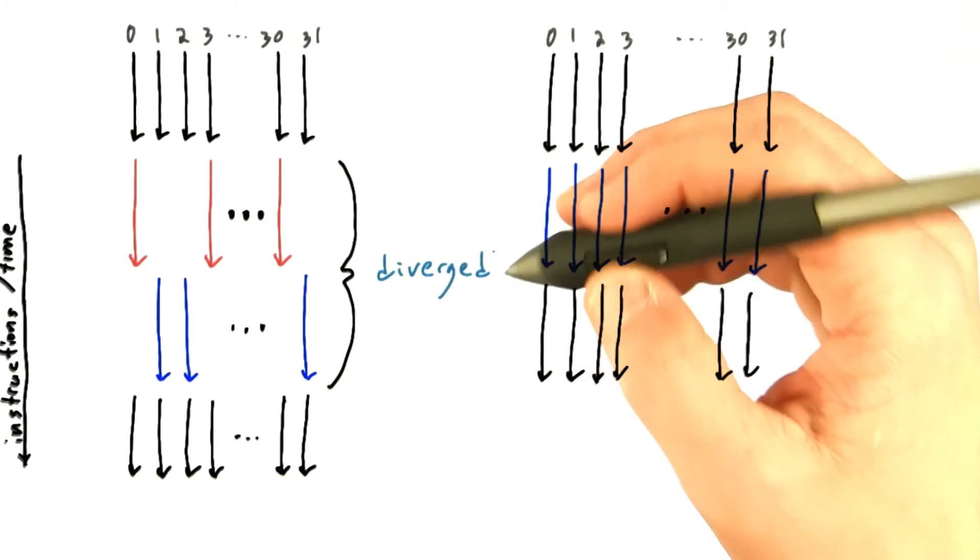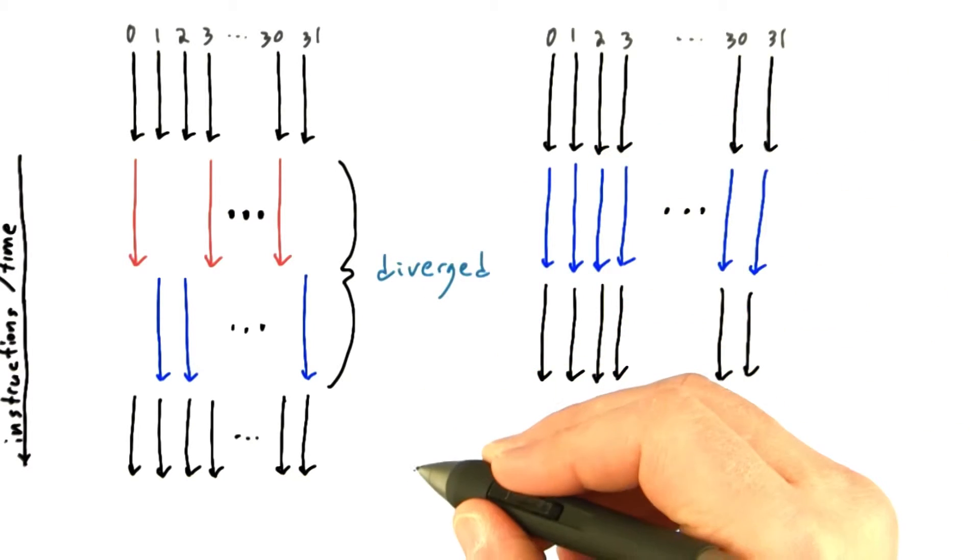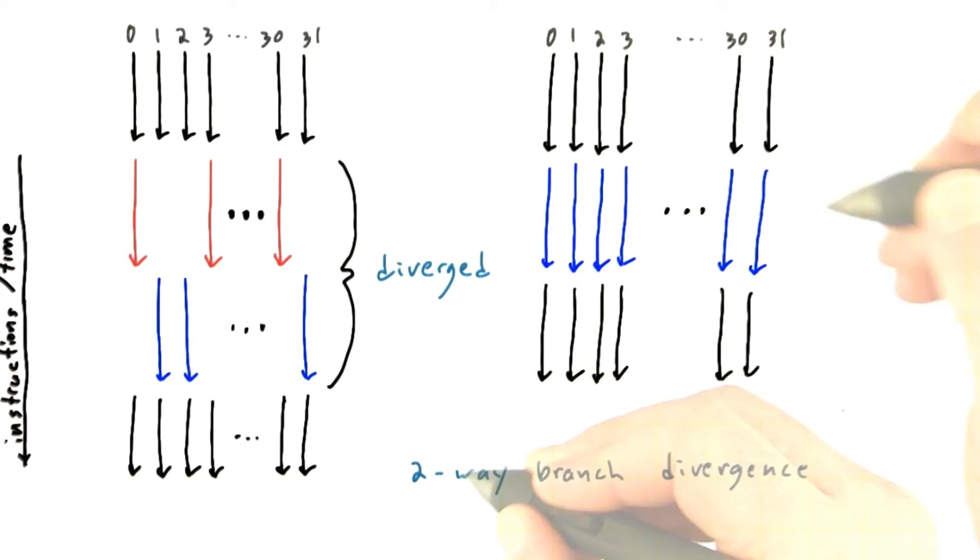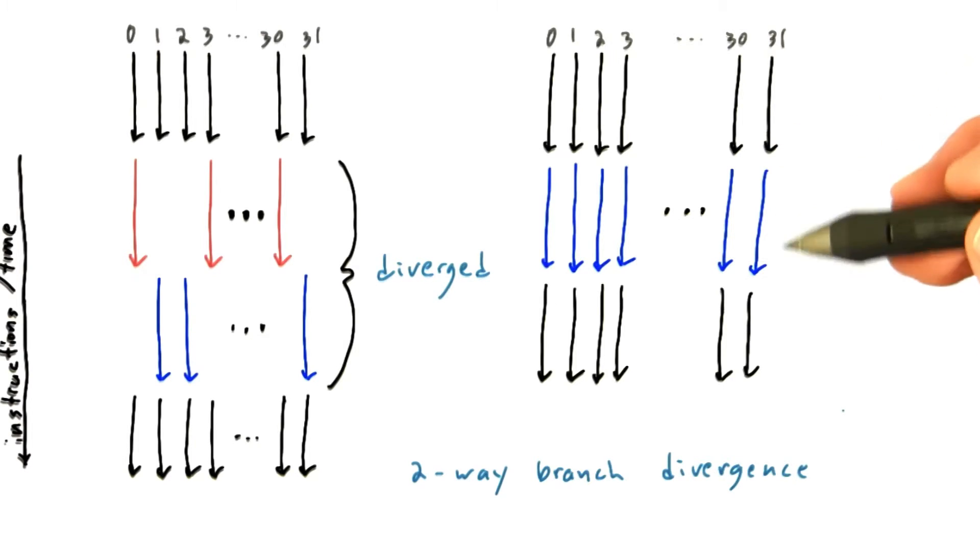We say that the threads have diverged during this section of the code, and we would refer to this as two-way branch divergence. If I had written a nested if-else statement, I could have four-way branch divergence, and could take even longer to execute.